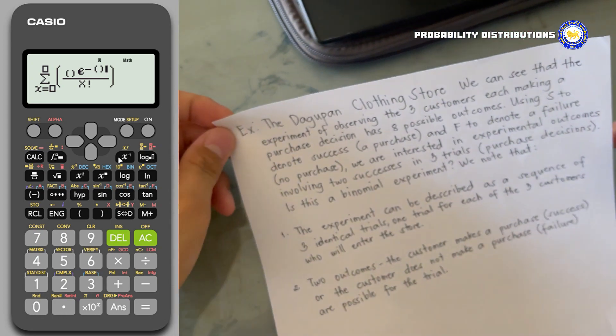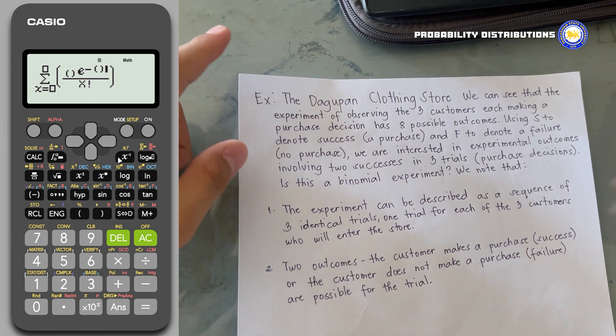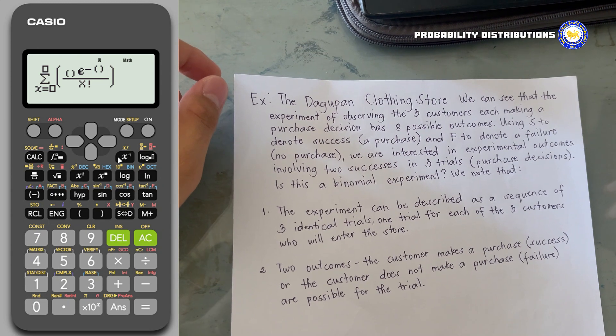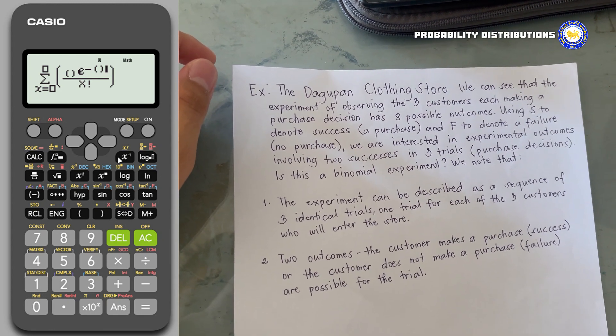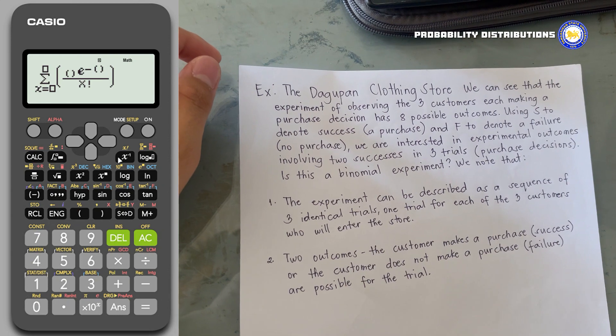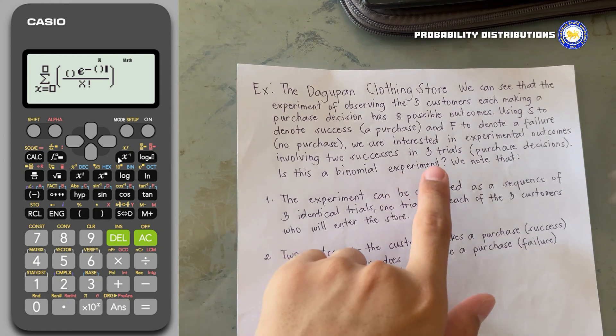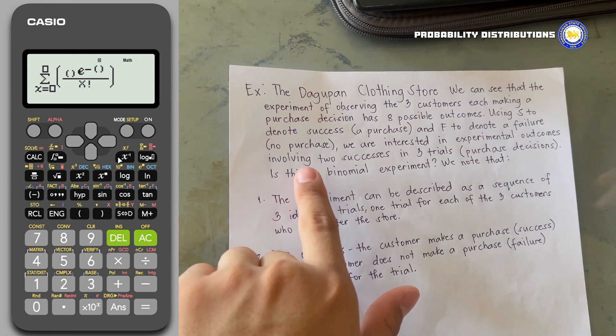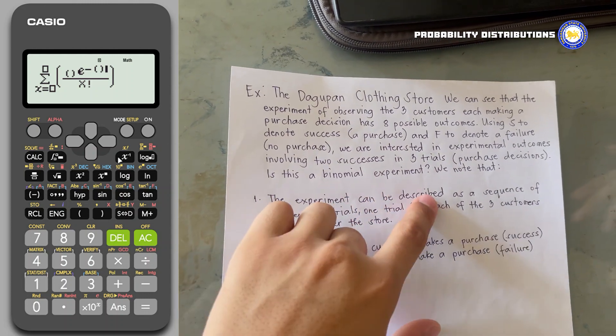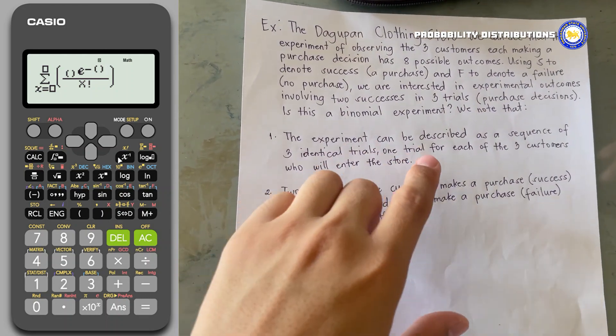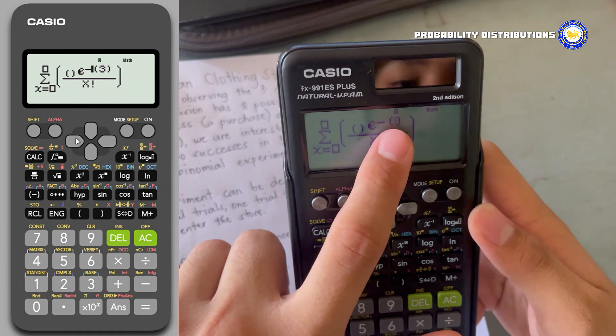Here's a sample problem set for distribution. At a clothing store, we can see that the experiment of observing three customers each making a purchase decision has eight possible outcomes. Using S to denote success, a purchase, and F to denote a failure, no purchase, we are interested in experimental outcomes involving two successes in three trials. Is this a binomial experiment? We note that first, the experiment can be described as a sequence of three identical trials, one trial for each of the three customers who will enter the store. We will put 3 inside the parentheses.